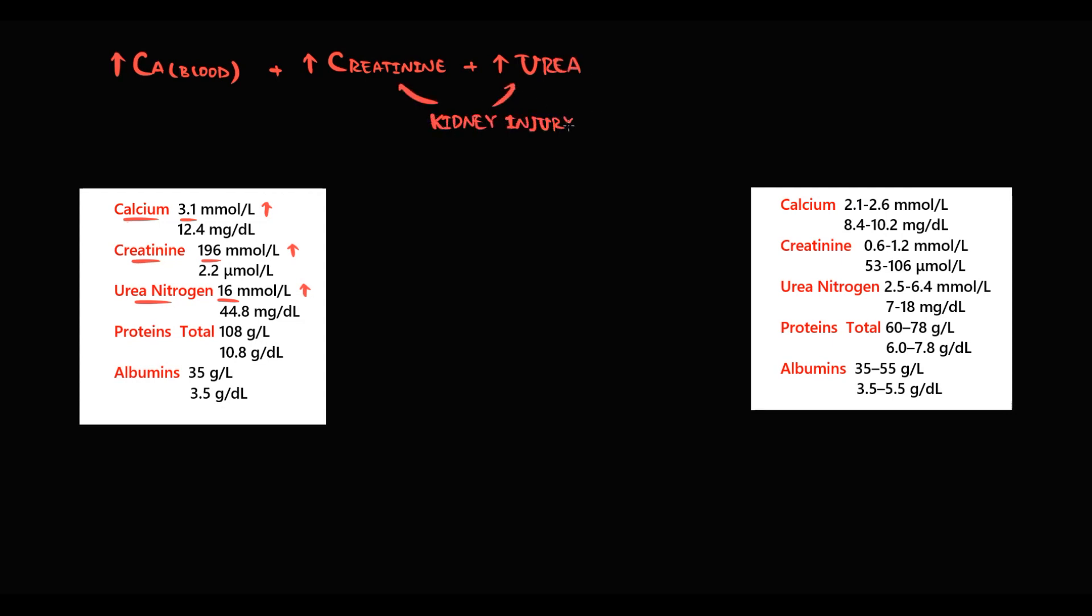We also see elevated total protein level in combination with normal albumin level, which means there is an elevation in some protein fraction. In biochemical analysis we can see only albumin as the major protein fraction, but we also have alpha-1, alpha-2, and gamma globulins. In this case, the elevation is significant. To determine the amount of other proteins, we have to find the difference between total protein level and albumin.